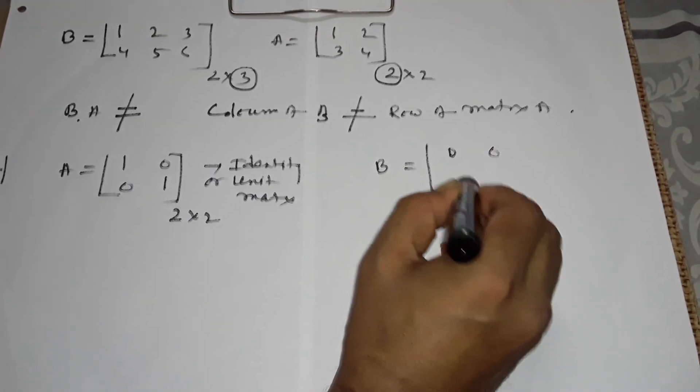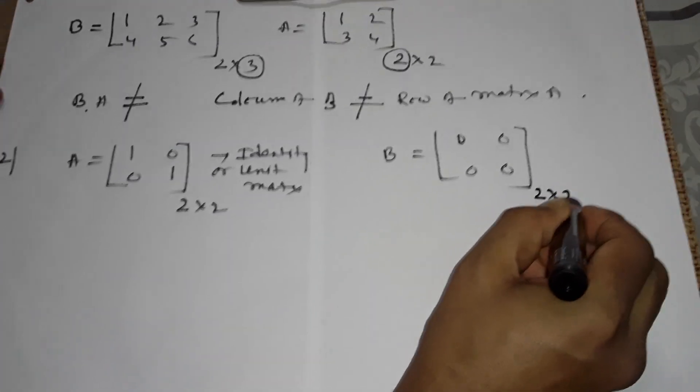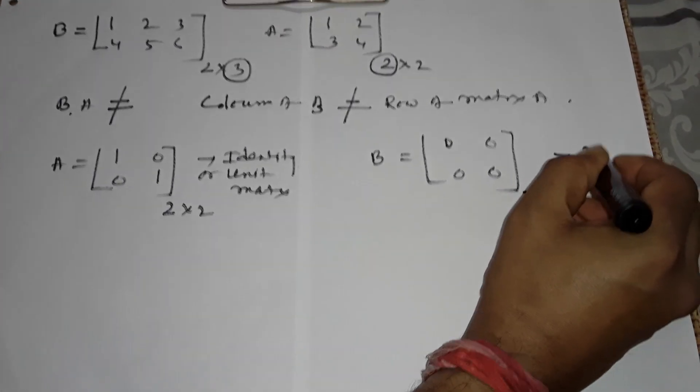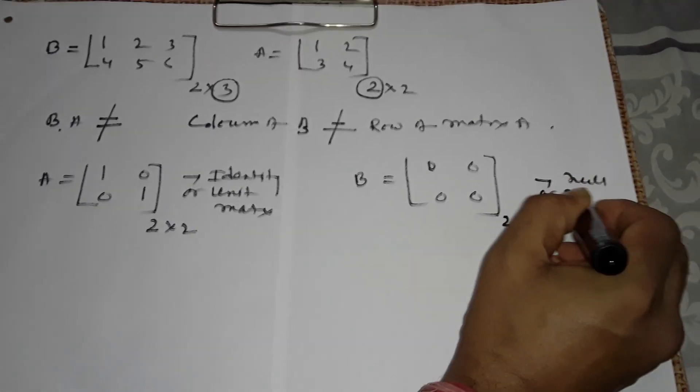Other matrix B: 0, 0, 0, 0. Order 2 into 2. It is called null matrix or zero matrix.